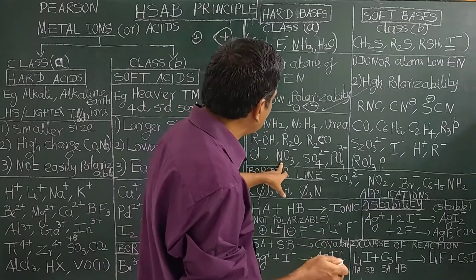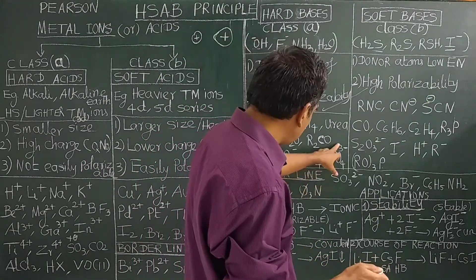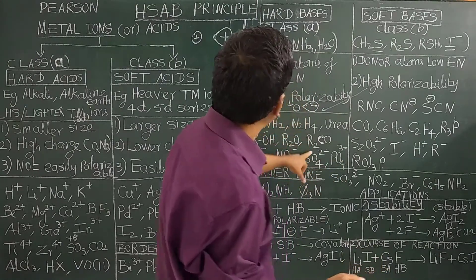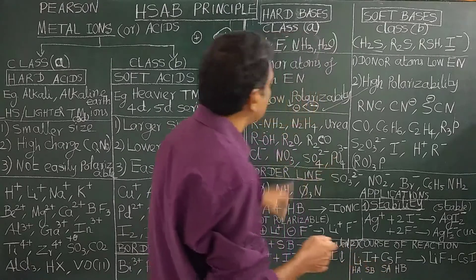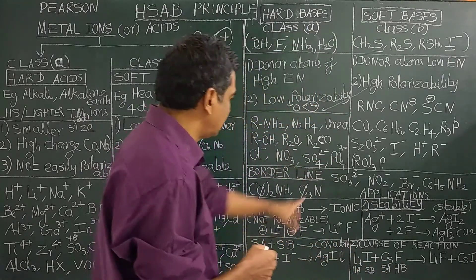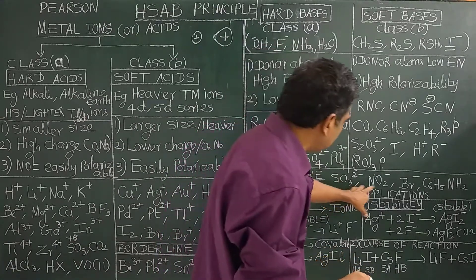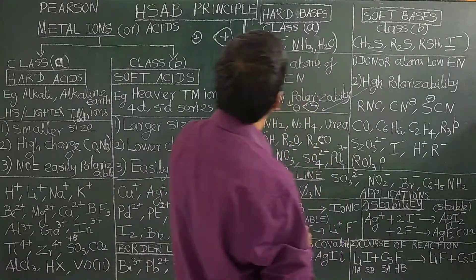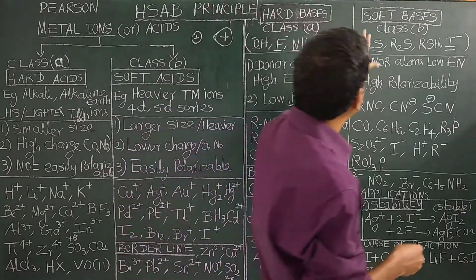Examples of hard bases include Cl−, NO3−, SO42−, BO3, and BO43−. These have high oxidation numbers. Higher oxidation number corresponds to hard bases.